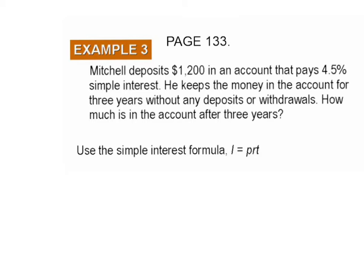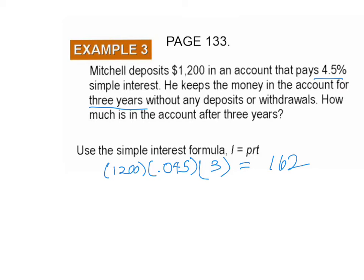So our principal is $1,200. Our rate is 4.5% as a decimal, 0.045. And our time is three years. If we plug that into our calculator — using parentheses so it knows to multiply — 1,200 times 0.045 times three equals 162.